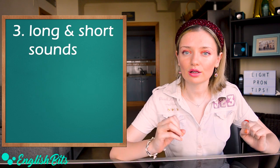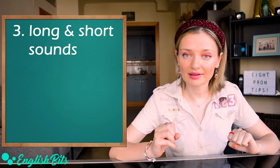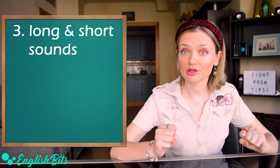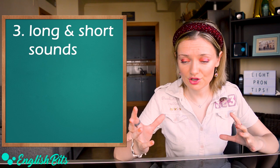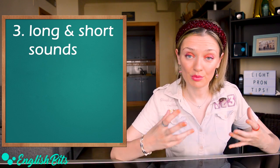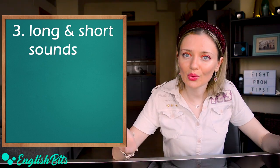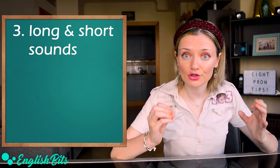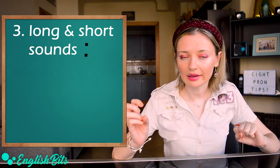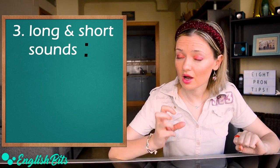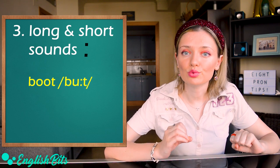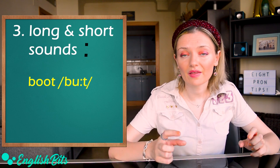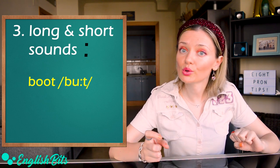My tip number three is long and short sounds. In English it's really important to distinguish between long and short sounds, unlike in Spanish, where all the sounds have the same duration. So how can we know if the sound is long or short? Whenever you see two dots next to a symbol, it means that the sound is long. For example, boot. We can see two dots, so it means that the sound o is long. Boot.